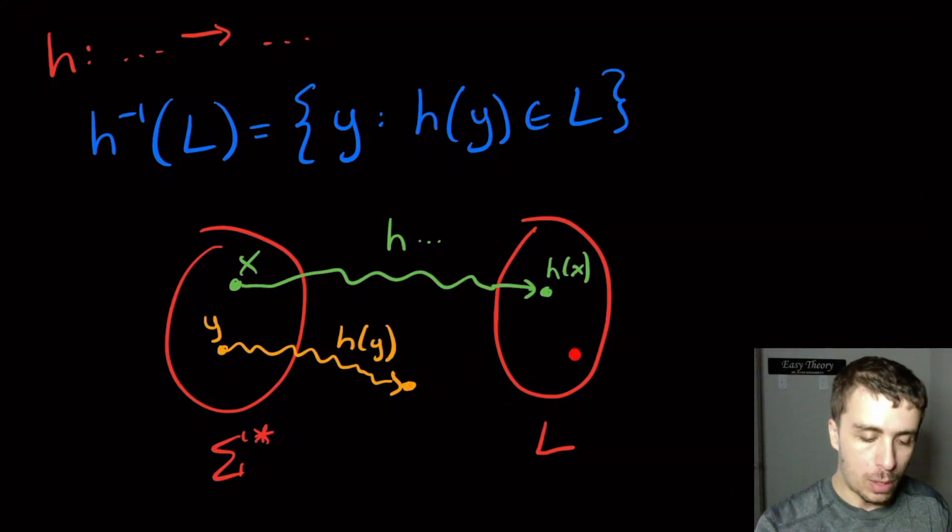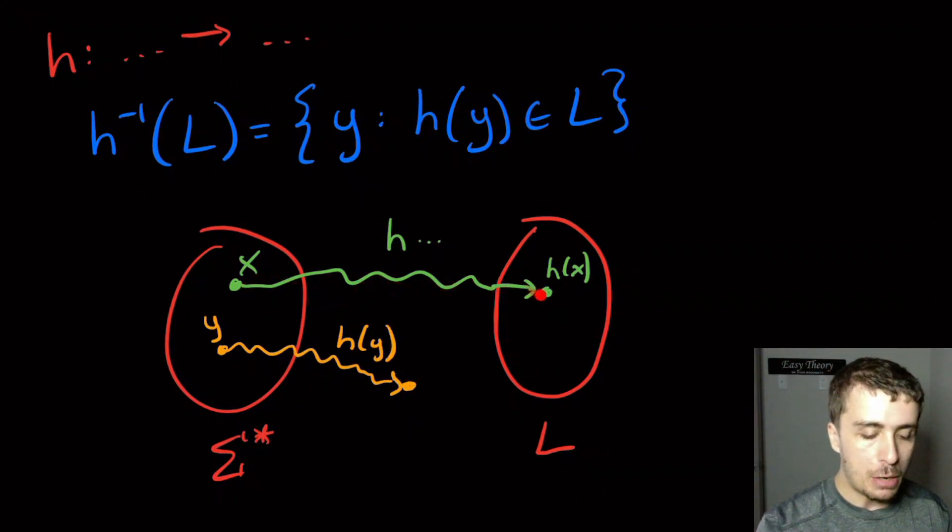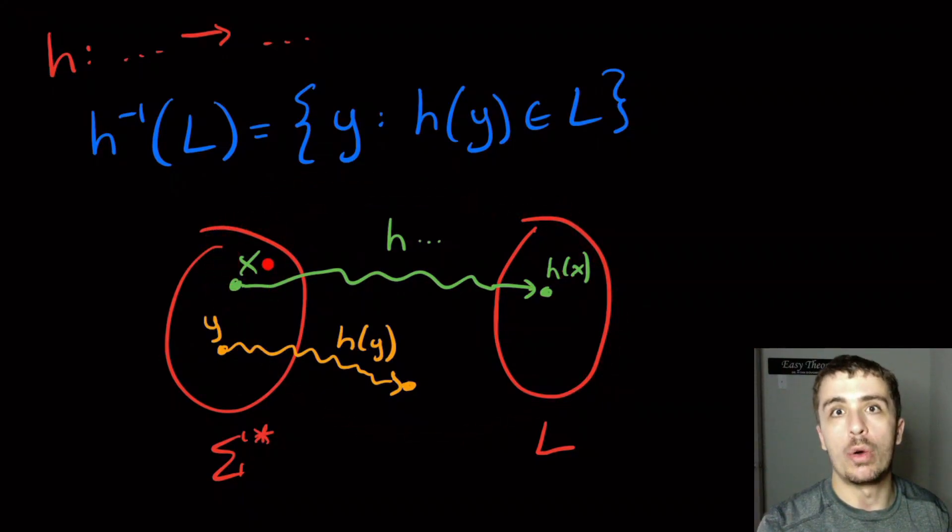So therefore, when we're over here, it runs in a finite amount of time, because we assume we have a decider for L. And this H function takes a finite amount of time, because we assume that it's computable. And so therefore, this whole process of figuring out whether X should be accepted or not, that takes a finite amount of time. That is a way to show that decidable languages are closed under inverse homomorphism. Now let's show that decidable languages are not closed under homomorphism.